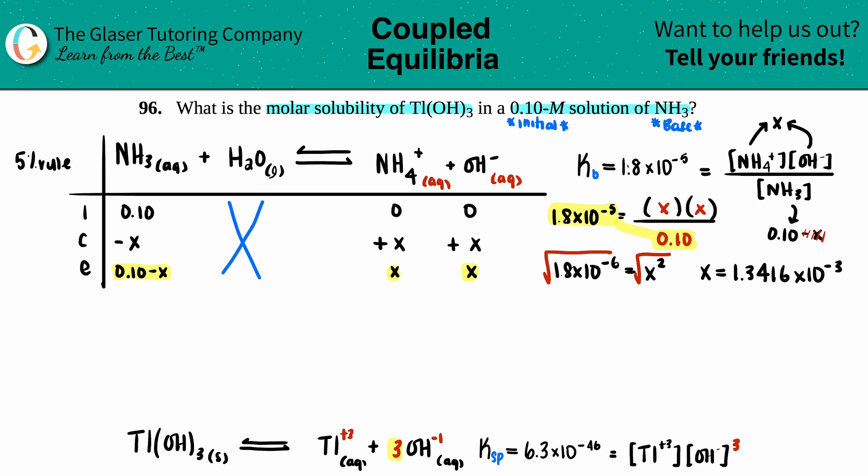Now does this pass the 5% rule? The 5% rule is the rule in which we could get rid of that minus x. So I'm just going to take this number and you always divide it by your initial, which was 0.10, and times by 100. If you get 5 or less, you're good. But if we get over 5, that means we have to go back and keep that negative x in there. But when I do my math, I get, oh yeah, I get 1.3%, so we pass the 5% rule. So now I can just say that this is molarity.